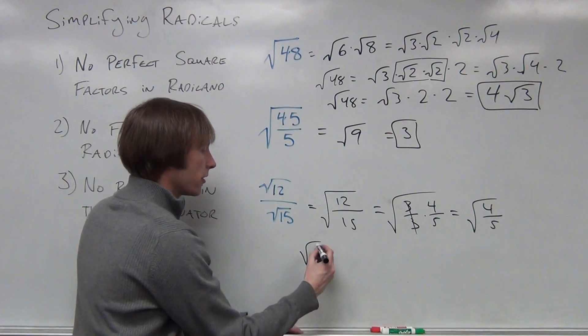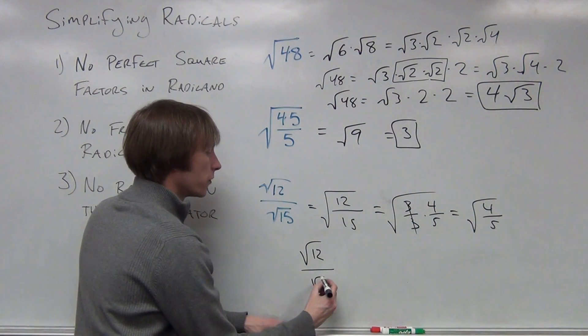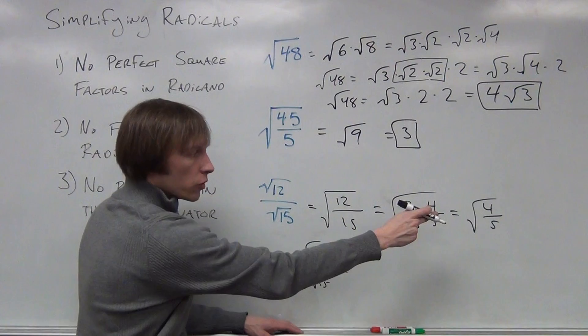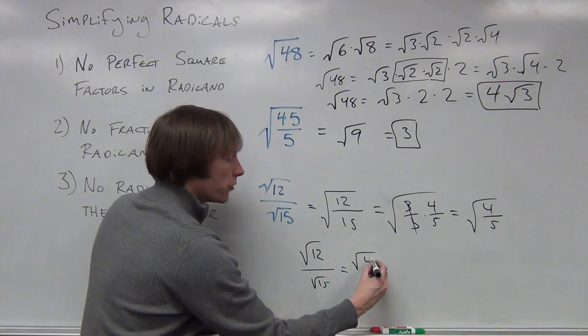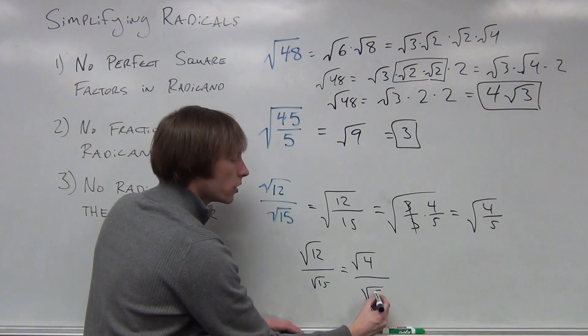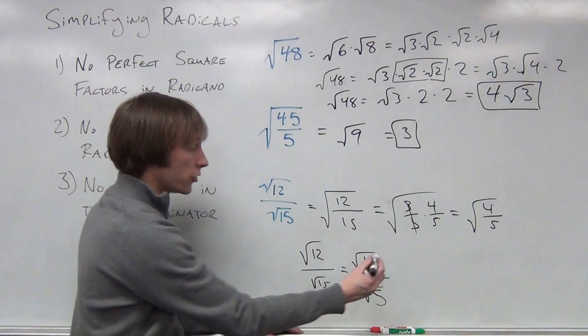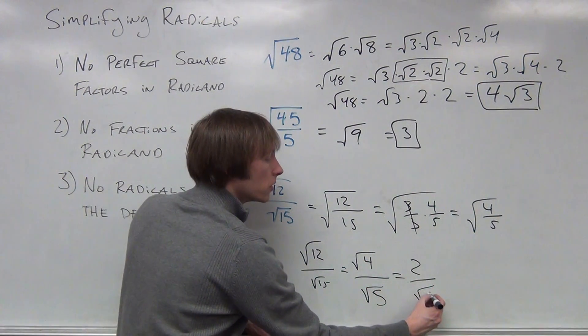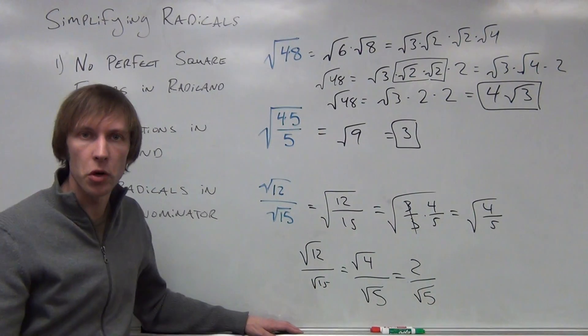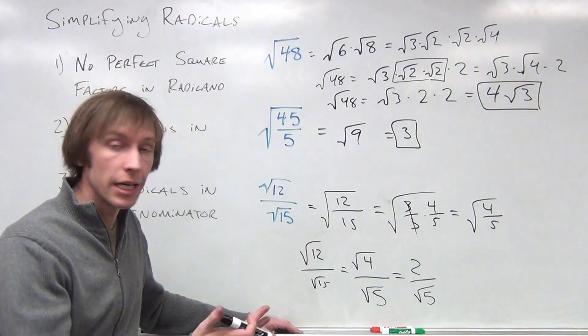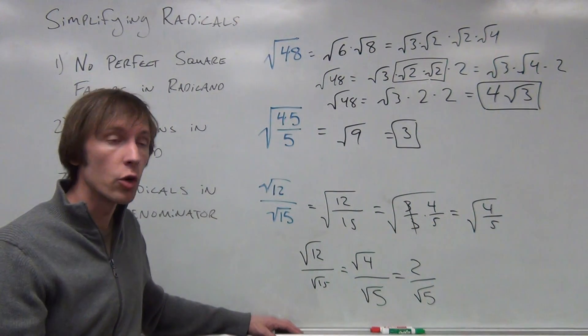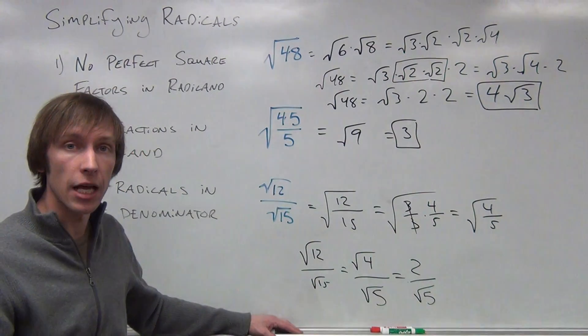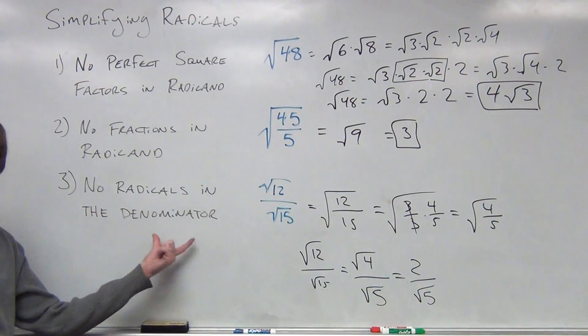Now, what we're going to do with that is we're going to take our square root of 12, square root of 15, and we're going to rewrite this as the square root of 4 over the square root of 5. Now, the square root of 4 I can do. That's 2. But the square root of 5 is an irrational number. It can't be simplified any better. We need to rationalize the denominator. No radicals in the denominator.